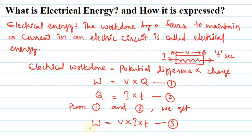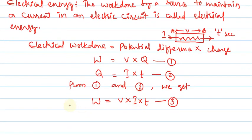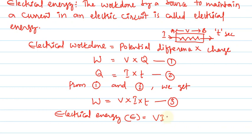The relation will be W = V × I × T, so this is expression 3, where work done is the product of potential difference, current, and time. This work done is nothing but electrical energy, so we can write electrical energy E = VIt.